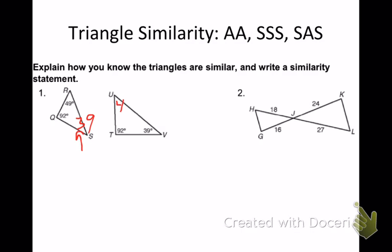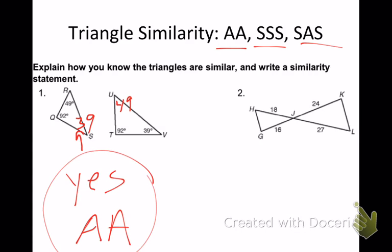Then it's 49. Are these two triangles similar? Yes, they are. Which triangle similarity statement would that be? AA, SSS, or SAS? AA. That would be AA because the angles are congruent, which means the two triangles are similar.